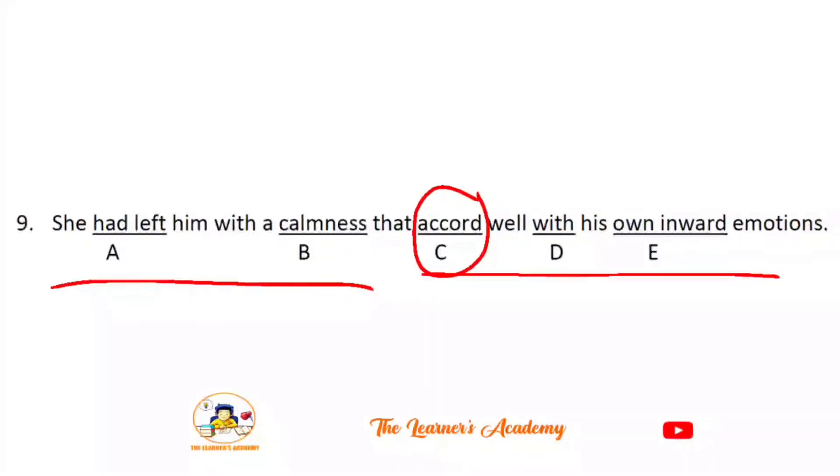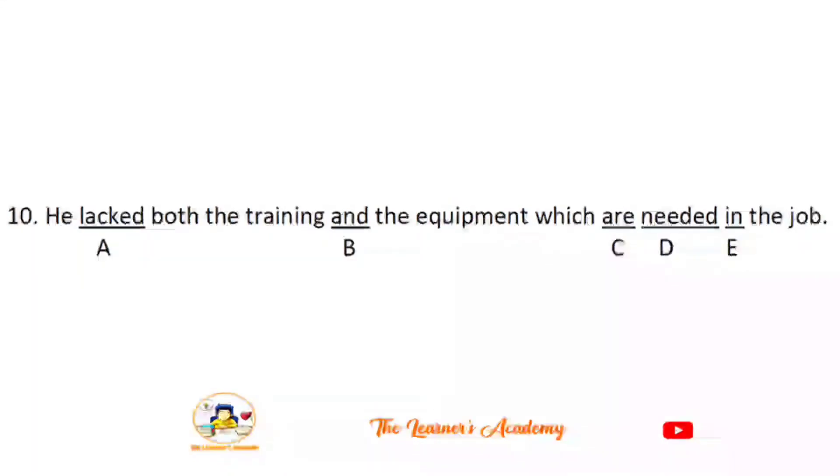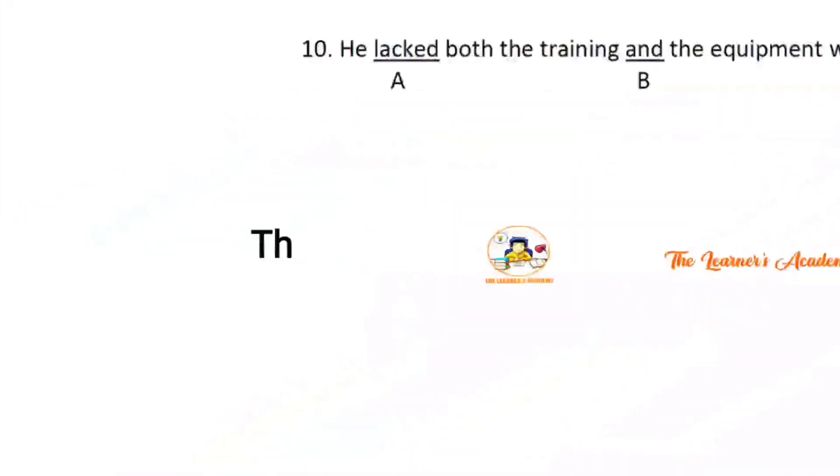Last sentence: He lacked both training and equipment which are needed in the job. The correct preposition is 'for' - needed for the job. 'Need' and 'want' use the preposition 'for'. This was our today's lecture. These topics used in error detection include prepositions, tenses and their sequence, nouns, and parts of speech. If you have any questions, ask in the comments. Thank you very much, see you in the next video.